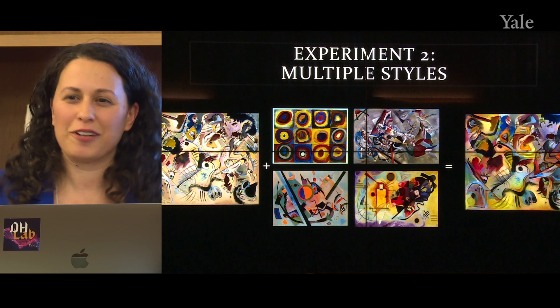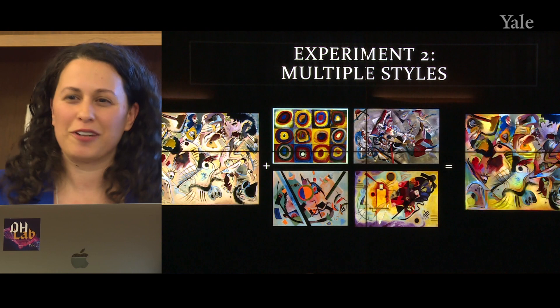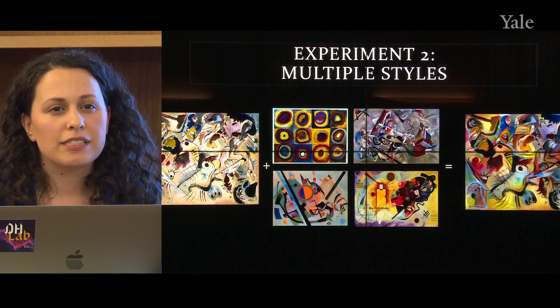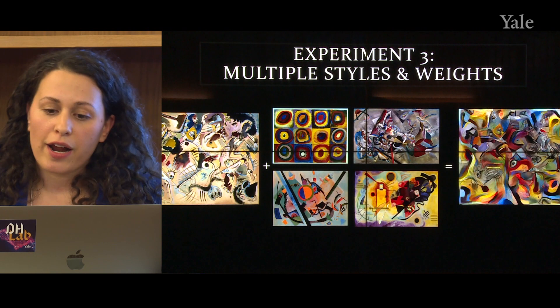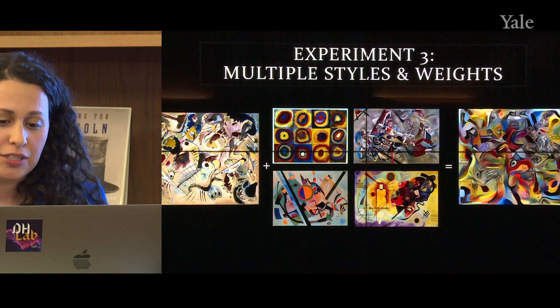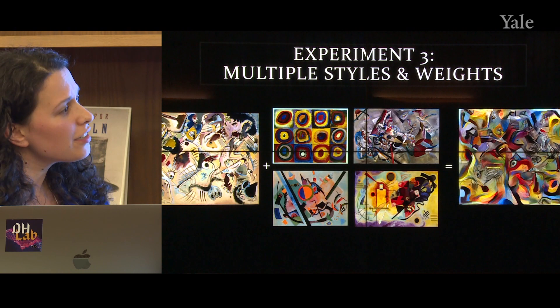The next step is one that starts being promising for what the student was hoping to do — you can also adjust the weights. You can trade off between how much you retain of the content image and how much you are taking from the style images. Changing the weights will result in higher loss for each of those epochs, but as a result you start to see greater change with each iteration, and you start to get something that feels a little more transformative.